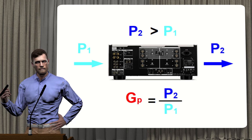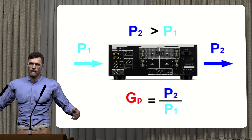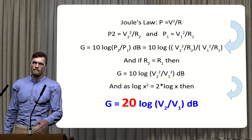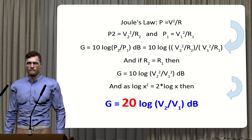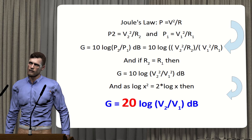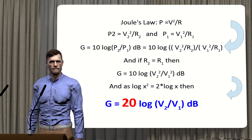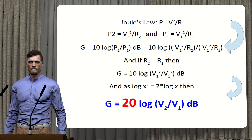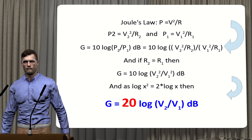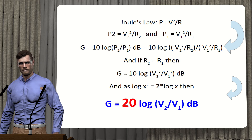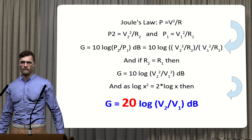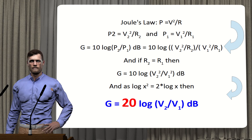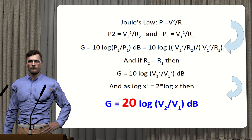Until now I have referred to the relationship between powers. Now we extend the application to situations where we measure voltages, expressing the result also in dB. For this we use Joule's law expressed as a function of voltage and resistance. If we substitute powers with their voltage-and-resistance equivalents and consider that input and output resistances are similar, we obtain the power gain as a function of output and input voltage. Because the voltages are squared, the number 2 can be taken out of the logarithm as a multiplier, giving an expression multiplied by 20 instead of 10.